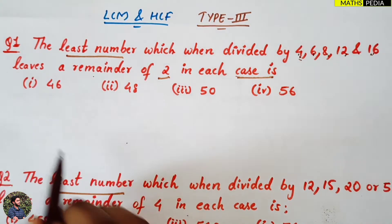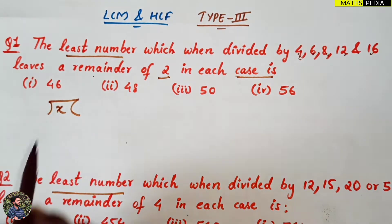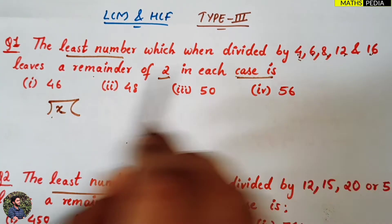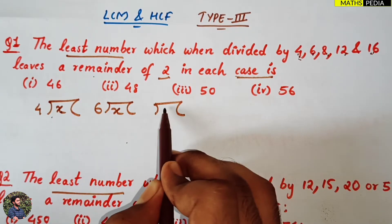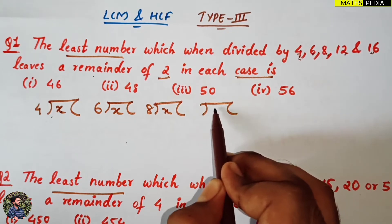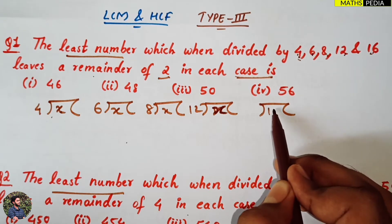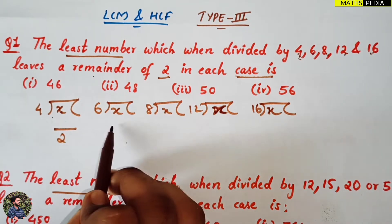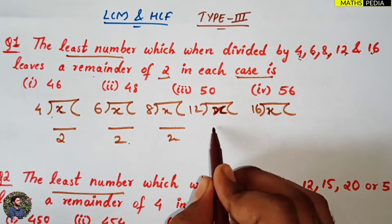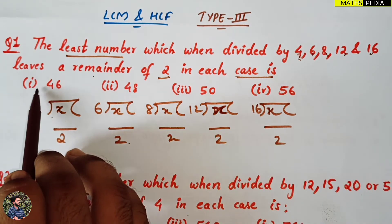We will understand the question. Least number means the smallest number — let's call it X — which when divided by 4, 6, 8, 12, and 16 each time gives the same remainder. So X divided by 4, X divided by 6, X divided by 8, X divided by 12, and X divided by 16 all leave remainder 2.